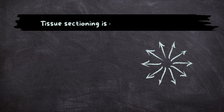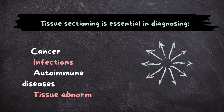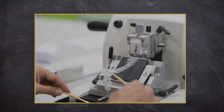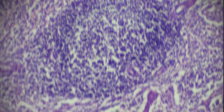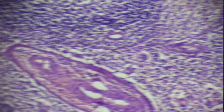Tissue sectioning is essential in diagnosing cancer, infections, autoimmune diseases, and tissue abnormalities. Histopathologists use Microtomes to create these thin sections, which are then stained and examined under a microscope.